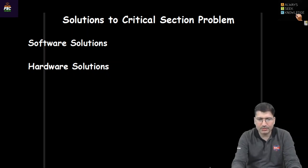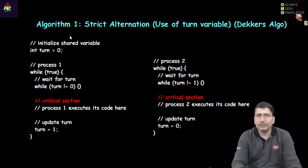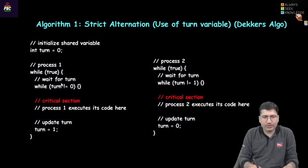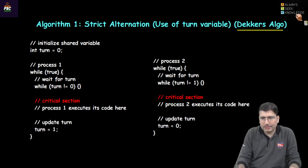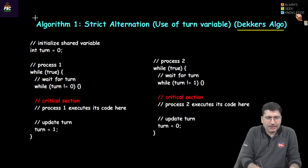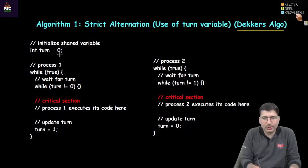Let us discuss the software-based solution first. The very first solution given in Galvin or most books is based on a shared variable. This first solution is proposed based on the shared variable, also known as Decker's algorithm. In this solution, there is a variable TURN, and TURN is a shared variable. Both process 1 and process 2 will use this TURN variable.